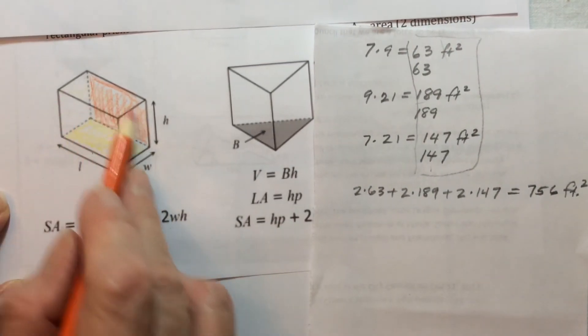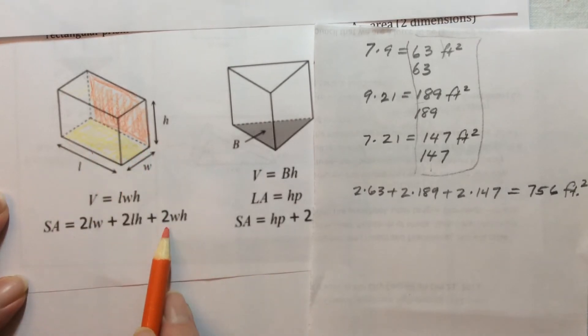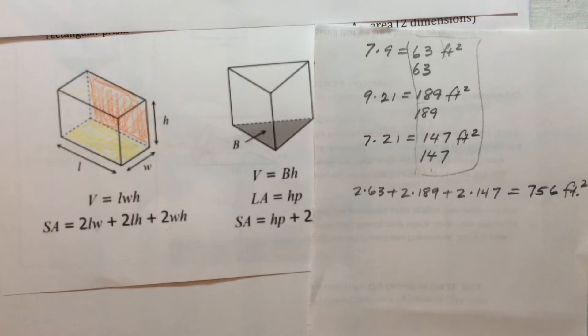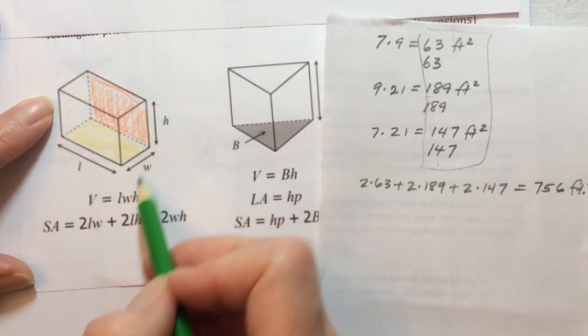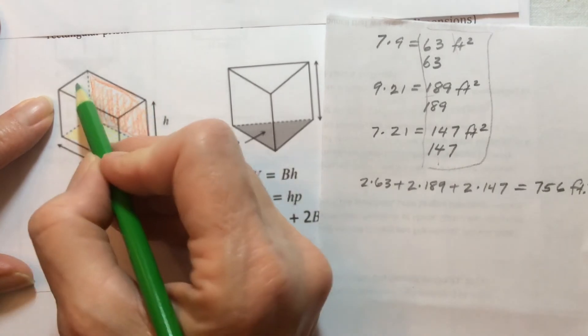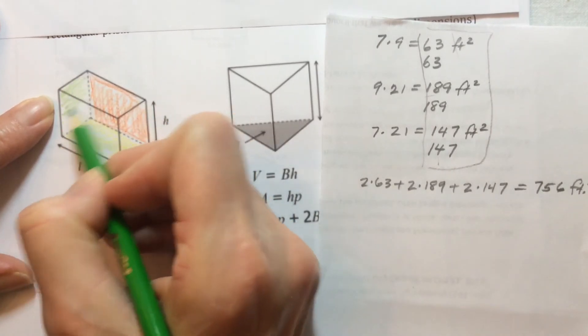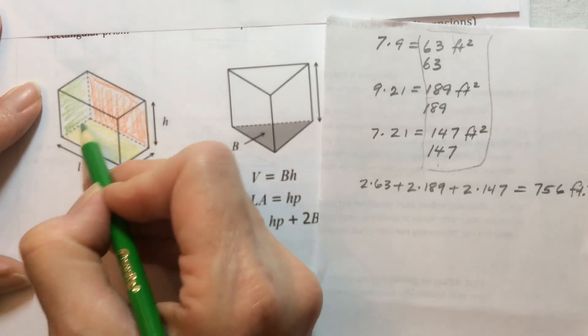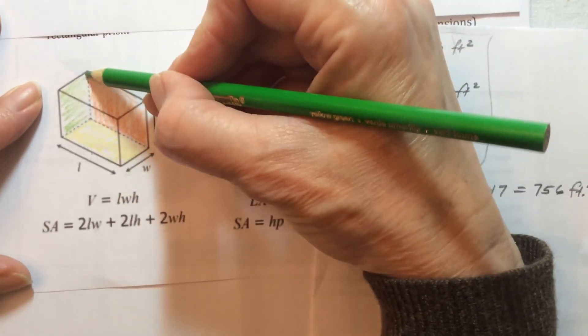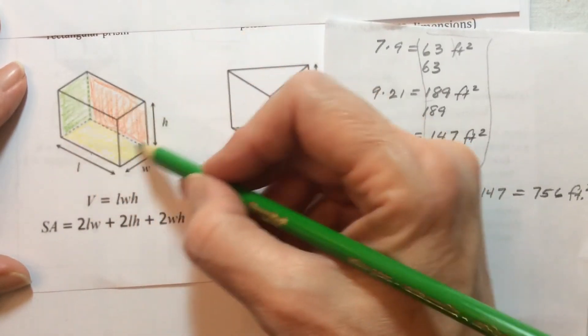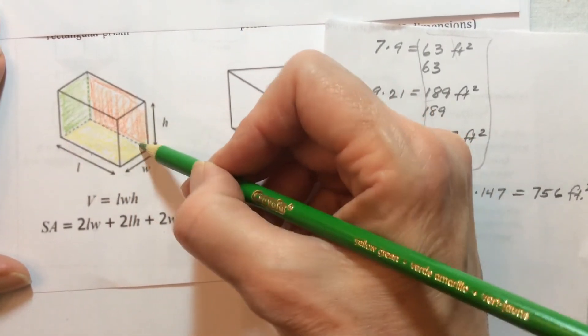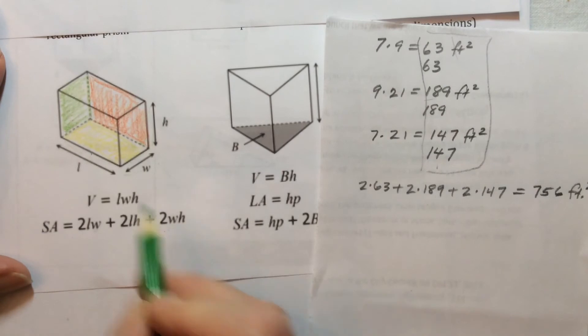And then the width times the height. So that's this last face, the width times the height, and there are two of those: the one in back and the one right here in front. So 2 times the width times the height.